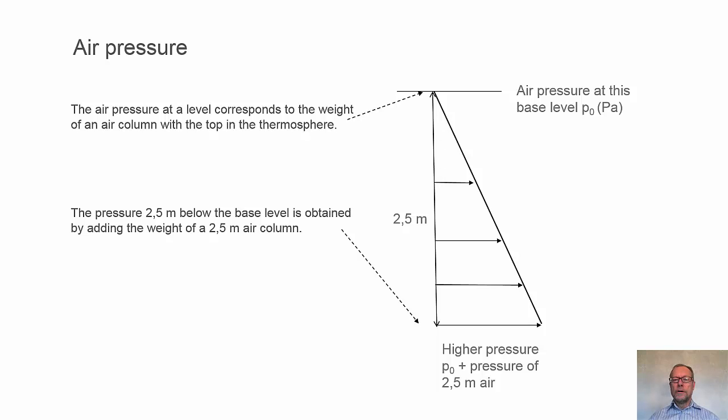But if we go further down 2.5 meters like the room height, there will be more air, a further weight due to the mass of the air. So 2.5 meters down there will be a higher pressure equivalent to 2.5 meters, the weight of 2.5 meters of air.